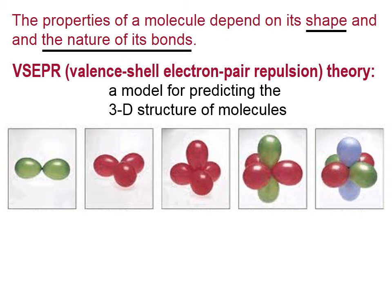VSEPR is perhaps best introduced if we imagine tying the ends of balloons together. If you tie two balloons together, they'll look like the picture on the left. If you tie three together, they will push each other apart in sort of a Mercedes-Benz symbol shape. If you add a fourth balloon, you'll get kind of a tripod on the bottom with one balloon sticking up.